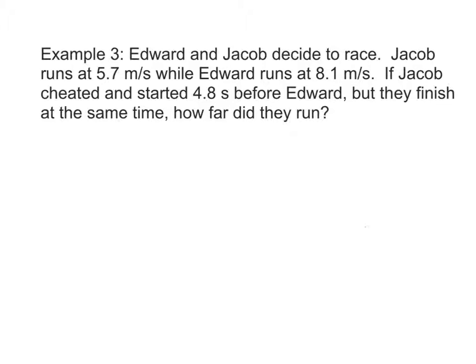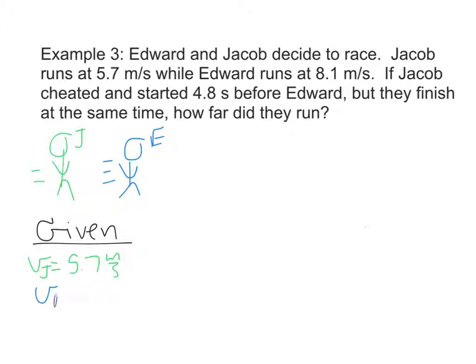First thing we want to do is draw our diagram. So we've got Jacob running, and we've got Edward running faster. The blue will be Edward, the green will be Jacob. Let's list what we're given. We know that Jacob's speed VJ is 5.7 meters per second. We know that Edward's speed VE is 8.1 meters per second. And we know that the time for Jacob TJ is 4.8 seconds plus however long Edward was running.